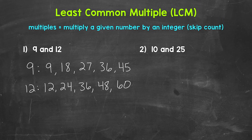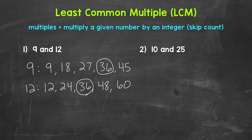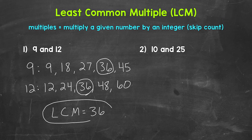Now that we have some multiples listed for both 9 and 12, we need to look for any common multiples — any multiples that they share — and specifically the least common multiple. 36 is a common multiple and it's going to be the least common multiple, the smallest multiple in value that they share. So the LCM is 36. The least common multiple of 9 and 12 is 36.